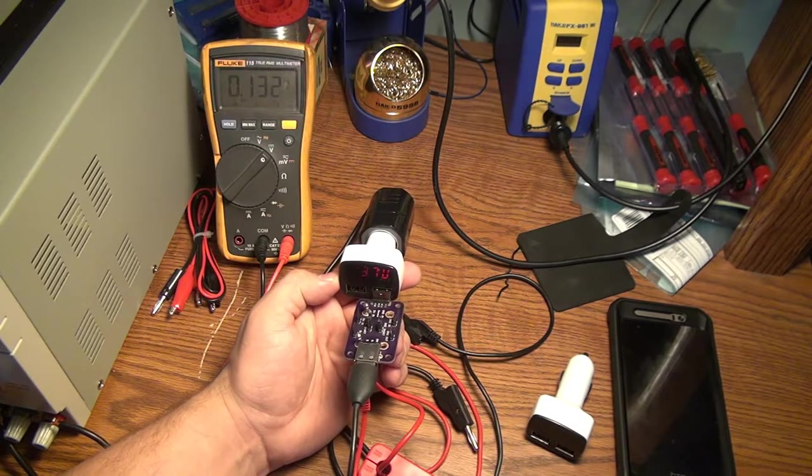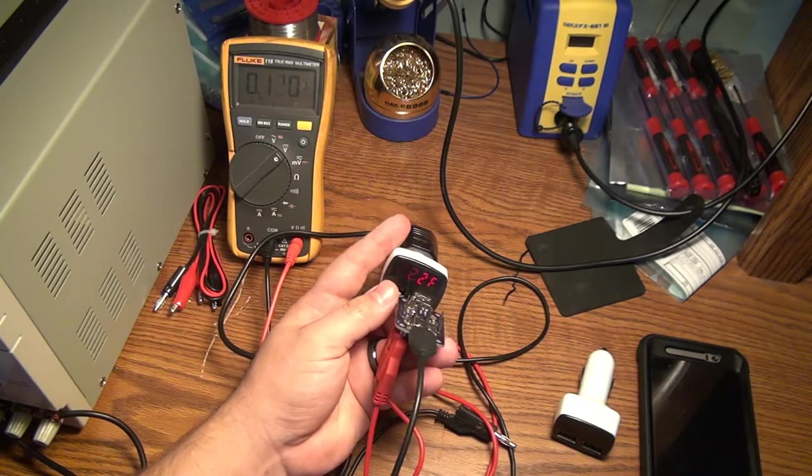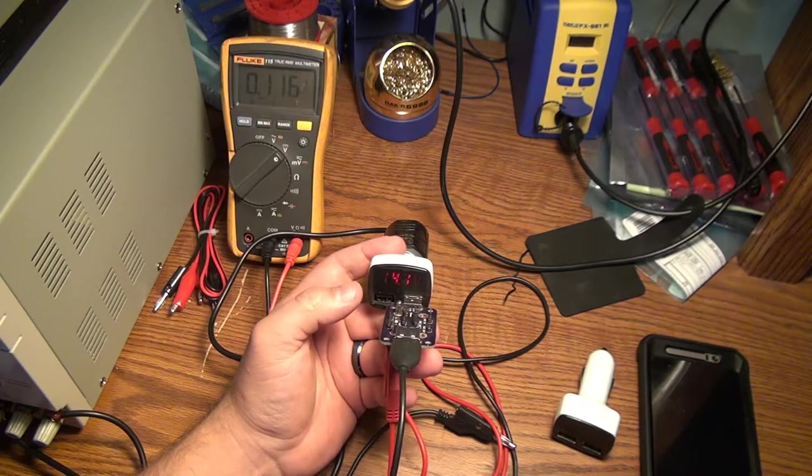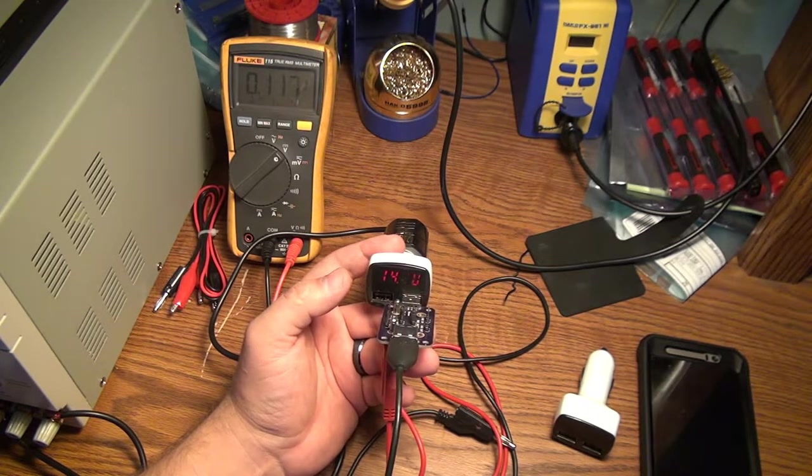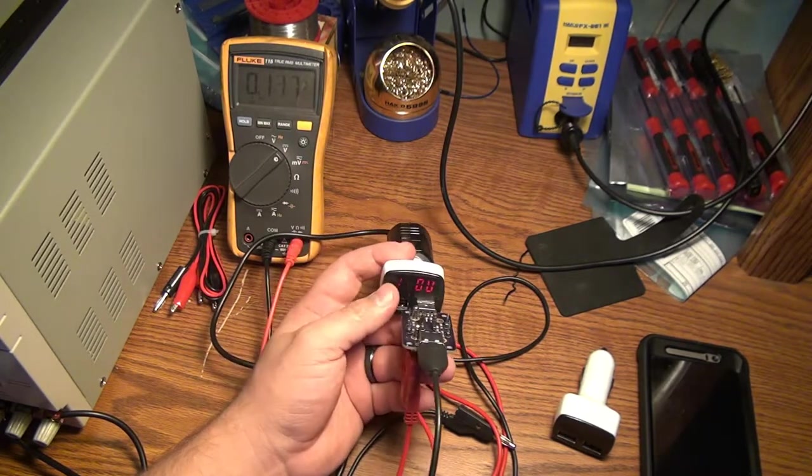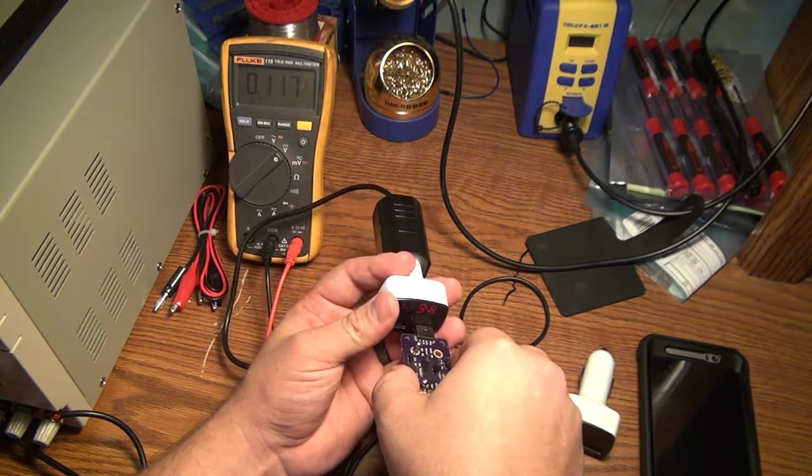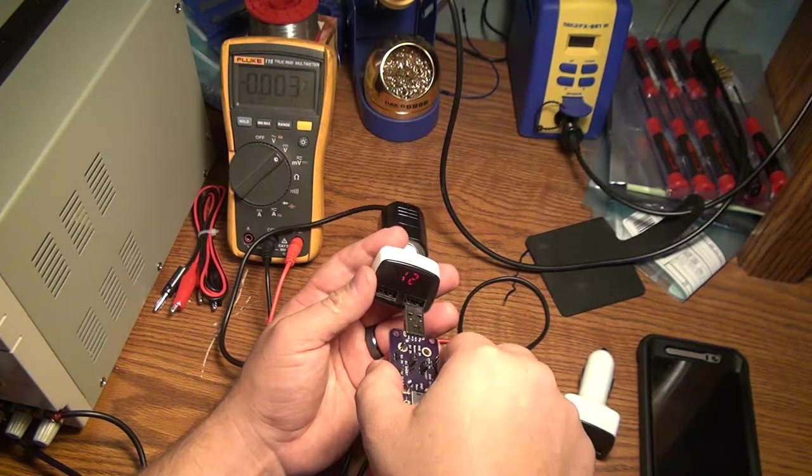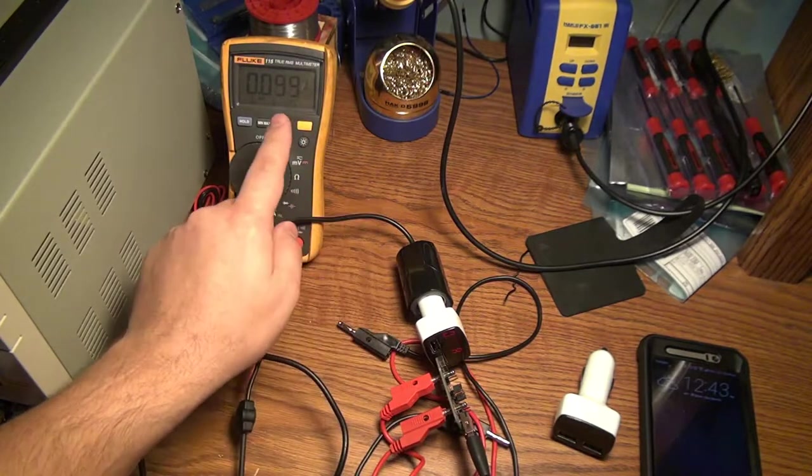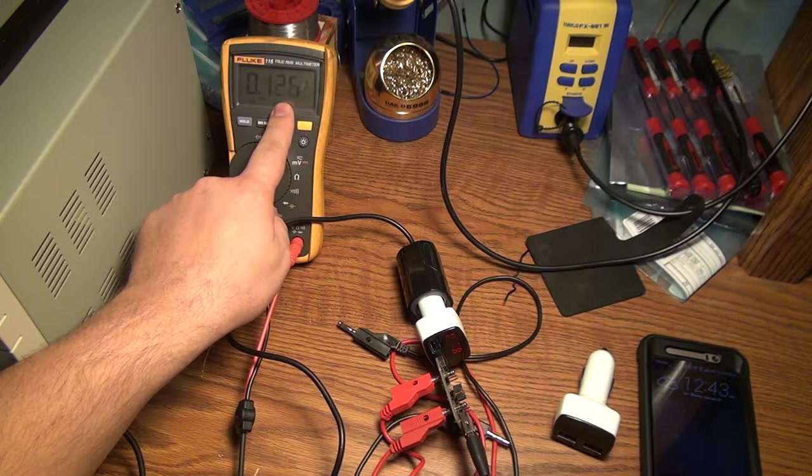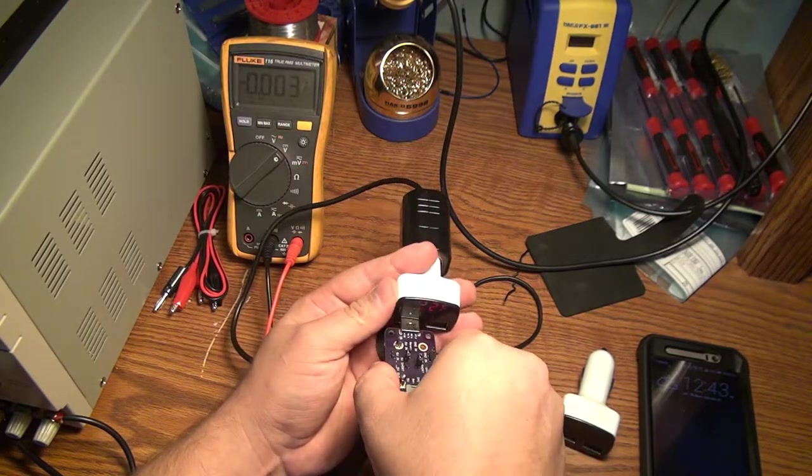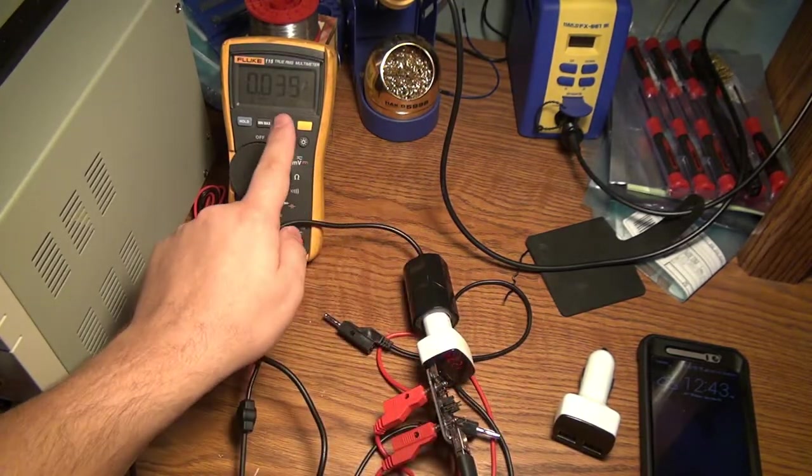Something to note is the reason they call this a dual USB charger is that they split up the Android functionality and the iPhone functionality into two separate ports. Right now I'm plugged into the right one which is meant for Android, and we can tell that because if we plug the charger in, almost immediately we jump to full charging voltage.